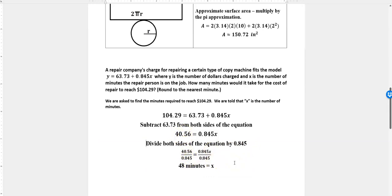What that looks like is putting both of those over that number and dividing. That gives me x over here because the two numbers here are the same, they cancel out, and over here I get 48 minutes. So it takes 48 minutes for them to charge that much money.